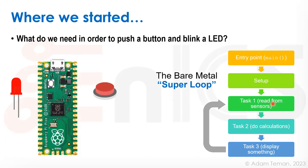Then we had a task. The first task was to read from a sensor like the button. Do a calculation — maybe decide what we want to do with the fact that somebody pressed the button — then display something, like go out to the LED and blink it. And then we would continue doing that task over and over again. That's this super loop.